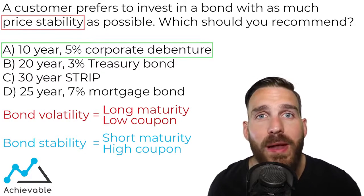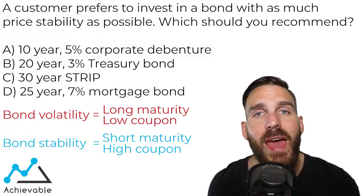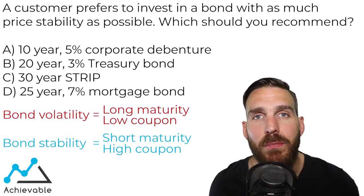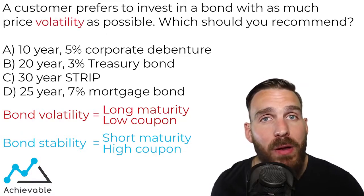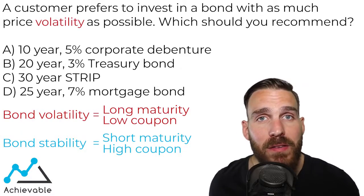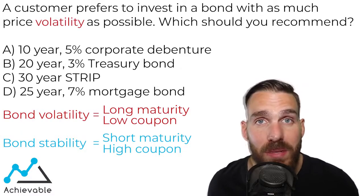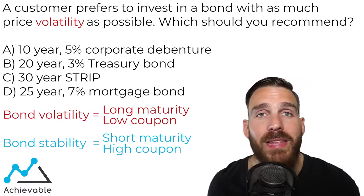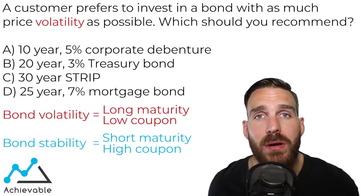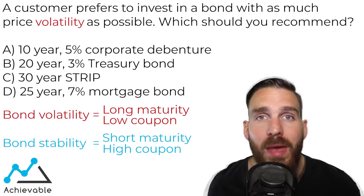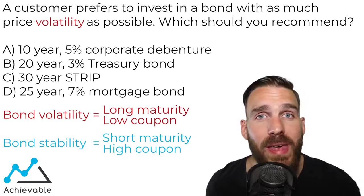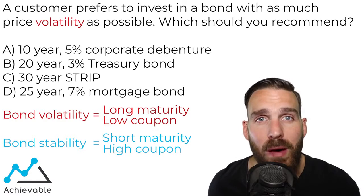Before we go, let's flip it on its head. What if they asked us what bond has the most price volatility? We need to go back to what we know: the bond with the longest maturity and the lowest coupon is the most volatile, and we can find that answer pretty quickly here as well.